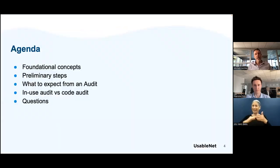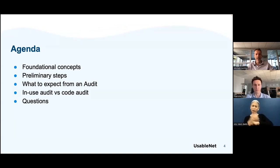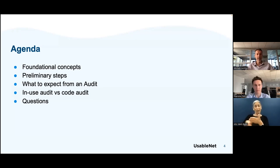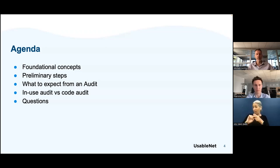Let's start reviewing together the agenda. We'll start focusing on some foundational concepts to set the background of what we are talking about — what is the environment that relates to an accessibility audit, trying to define its complexity. Then we'll discuss the preliminary steps when approaching an accessibility audit in terms of needs, goals, and objectives. We'll review what to expect from an audit, dig into the differences between an in-use audit versus a code audit, and then leave some space for Q&A.